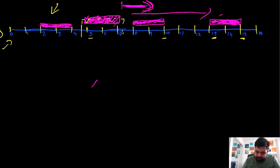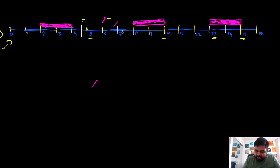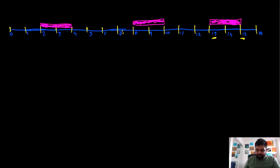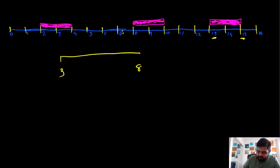So far we have seen three scenarios: inserting at the beginning, at the end, or somewhere in the middle — but in all cases there was no conflict between existing intervals and the new one. Now suppose the new interval we are trying to insert is something like three to eight. What should the approach be in this case?